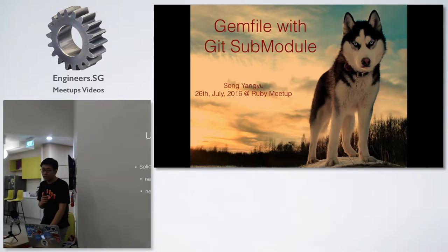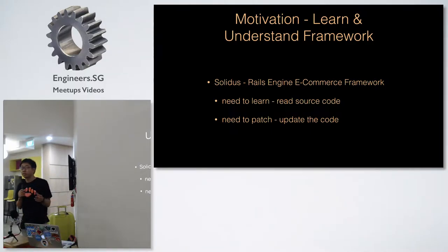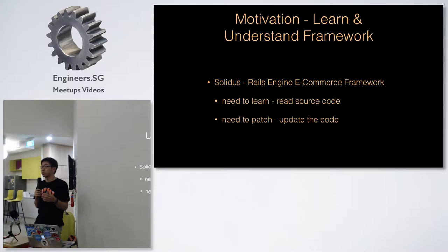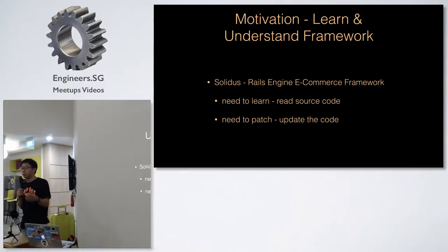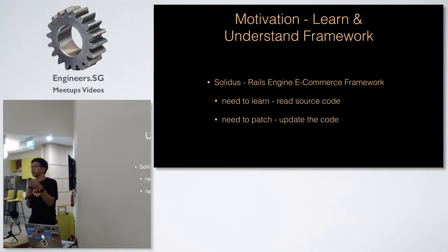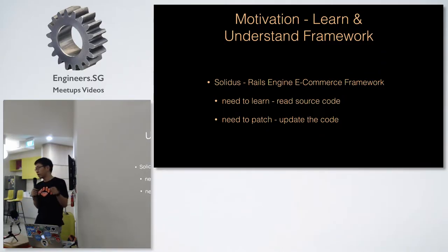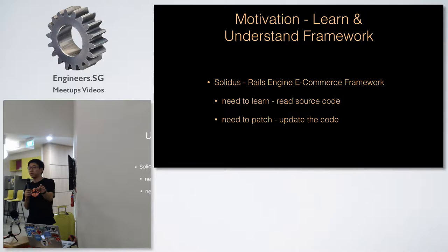The reason for doing that is I got two motivations. Number one is that sometimes you want to learn a certain framework. I was using Solidus — Solidus is a fork of Spree, which is an e-commerce Rails engine. It's really in the early stage, so I want to learn about it. By learning about it I read the source code, and sometimes I also want to patch the code a little bit, submit a pull request, and try to get it merged and update my local. So if I try to do some modification on the module itself and want to see the effect in my real app, I need to link the source code with my real app. But if I do the Gemfile that way, it means it's fetching from remote.